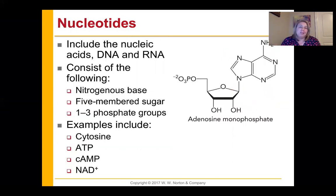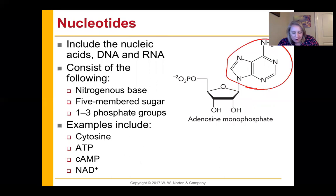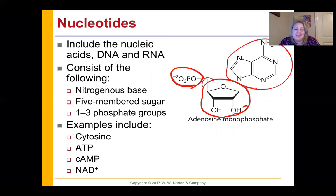Nucleotides are our nucleic acids — DNA and RNA — some of my favorite molecules. They consist of a nitrogenous base, a five-carbon ring sugar, and one to three phosphate groups attached to it. Nucleotides include not just regular DNA and RNA components, but also ATP, cyclic AMP, and NAD+. We're going to talk about the function of all those different molecules, but recognize it's more than just A, T, C, and G.